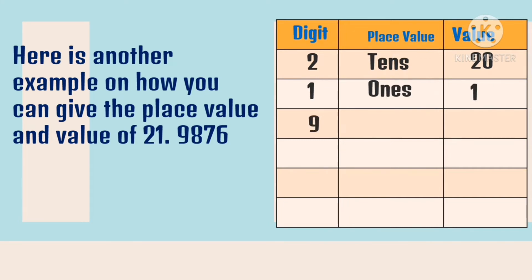Let's now proceed with the place value and value of the decimal numbers. The digits in the decimal places are nine. The place value of nine is tenths, and the value of nine is nine tenths.